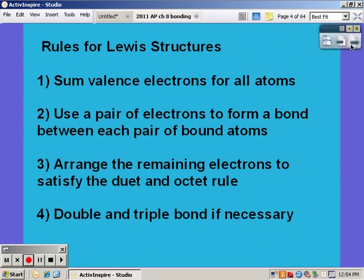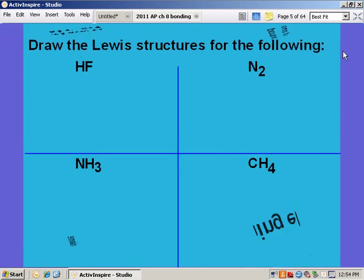To draw a Lewis structure you have to sum the valence electrons for all the atoms, then use a pair of electrons to form bonds between each pair of bound atoms, arrange the remaining electrons to satisfy the Duet and octet rules, and then finally double or triple bond if necessary.